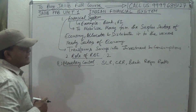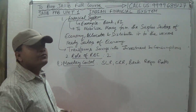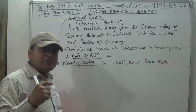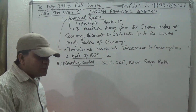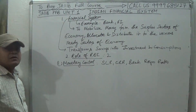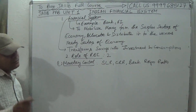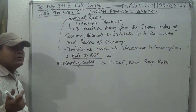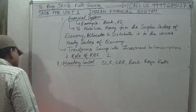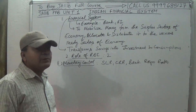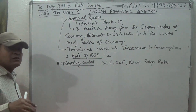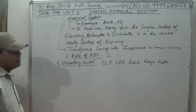SLR is the Statutory Liquidity Ratio — it is a certain percentage of money that banks are required to keep with themselves in order to cope with daily operational needs. CRR is the Cash Reserve Ratio — a certain amount of money that is required to be parked with the RBI. After that, there are bank repo rates, which include the repo rate and the reverse repo rate.